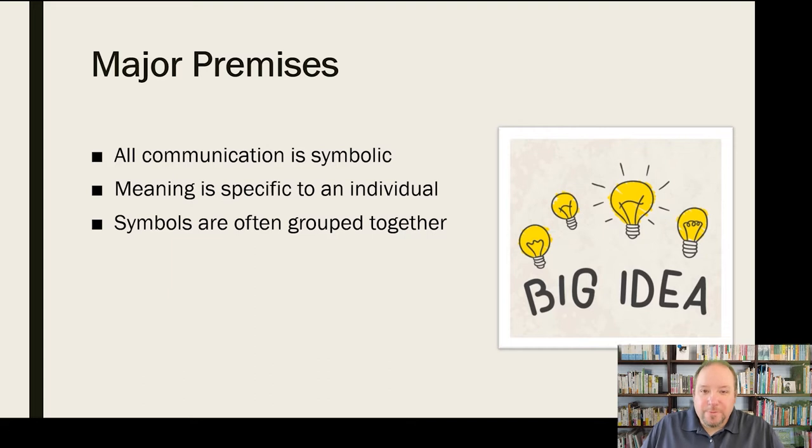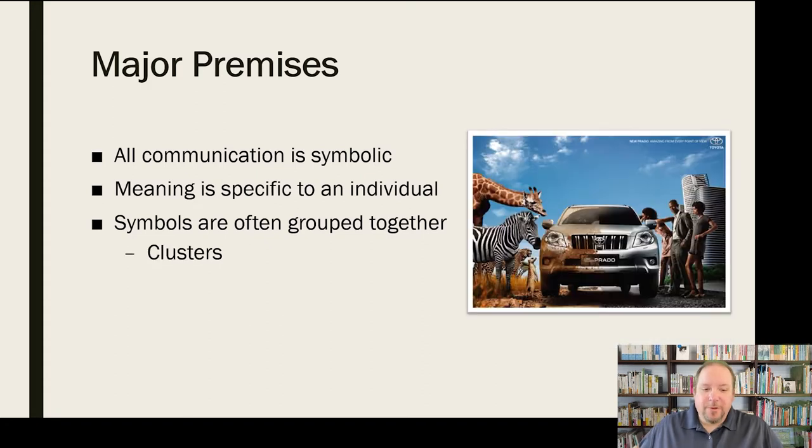Symbols are oftentimes grouped together, though, for use in different ways. So we group symbols together to create certain impressions or to deliver a particular message. We'll sometimes group them together, and there are a variety of ways that they're grouped together. The first way is what we call clusters, which is kind of a loose gathering of a few different symbols to make a certain impression. This ad is a cluster type example of that. This is a car ad. And so it just brings together different symbols. You've got the animals.